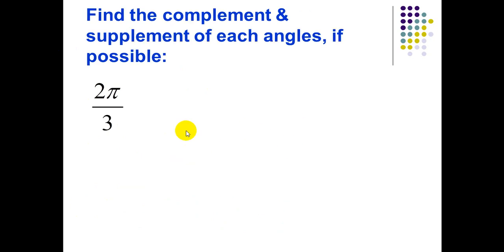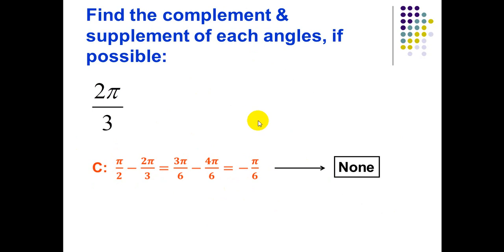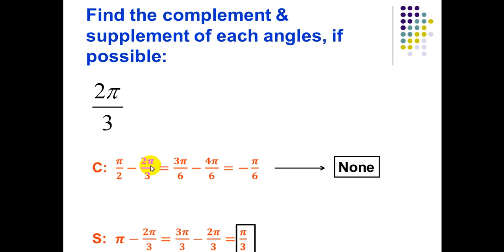Find the complement and supplement of each angle if possible, for 2π/3. For the complement: π/2 minus 2π/3 equals negative π/6, so it does not have a complement angle. For the supplementary angle: π minus 2π/3 equals π/3.